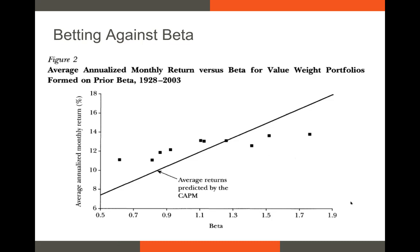The first anomaly to be familiar with is betting against beta. It indicates that if you plot the security market line and sort all securities into portfolios based on their betas, the securities in low-beta portfolios actually have positive alphas — higher than expected returns. Whereas securities in high-beta portfolios consistently underperform what the CAPM predicts. For example, a portfolio with a beta of 1.8 and an expected return of 17% might have an actual return of 13%, giving it a very negative alpha.